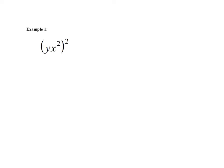In the first example, we have a monomial — y times x squared — and all of that raised to the second power. It's important that we look at this and understand what it's saying.